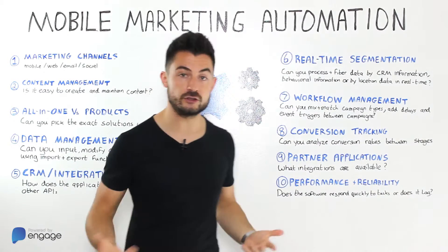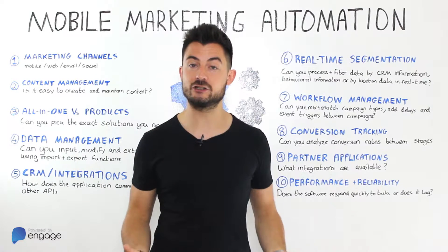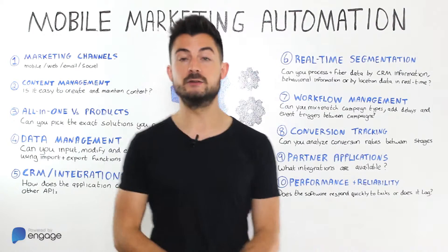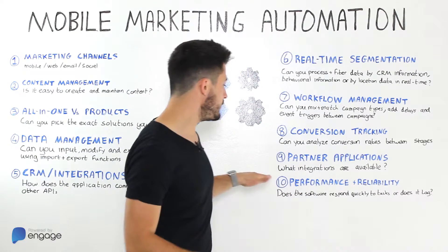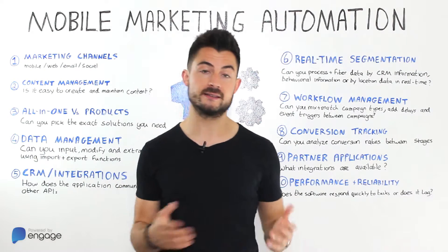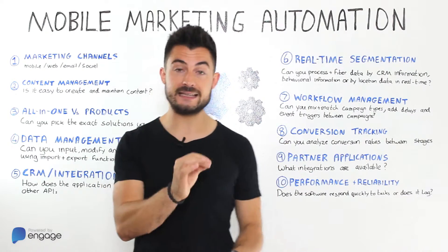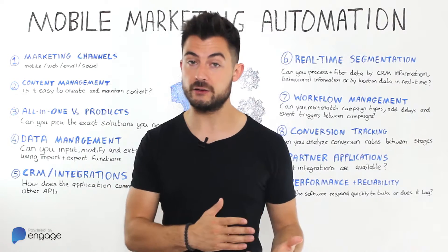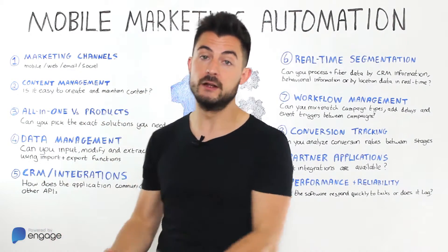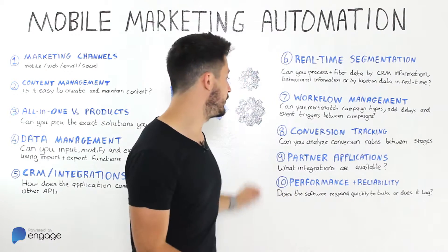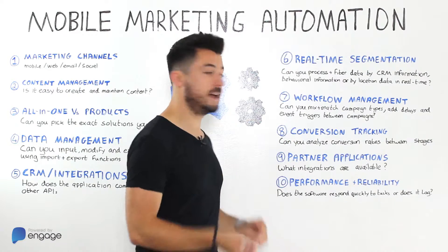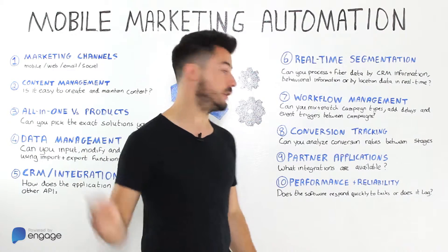Number eight: conversion tracking. Do your campaigns actually achieve a goal beyond the open rate? For example, do customers who come in from a push campaign go on to update their credit card details or book their first trip? The idea is that you event-tag various sections of your app and attribute those events occurring within a given time frame to the campaign — that becomes your goal or conversion rate for that campaign.